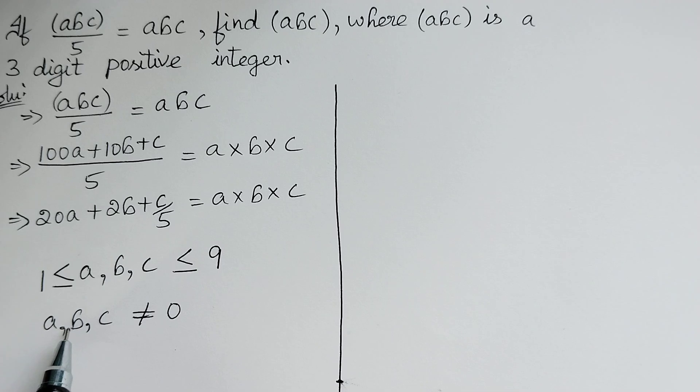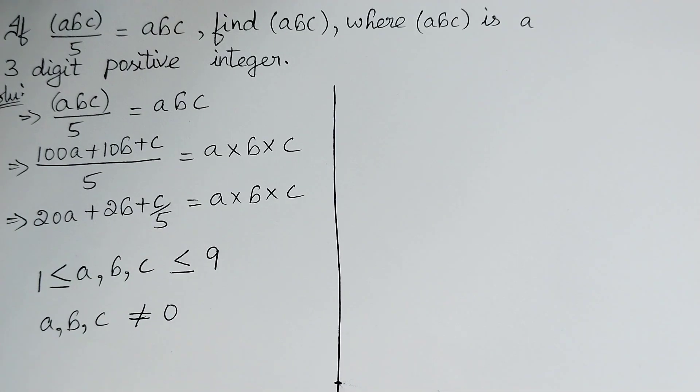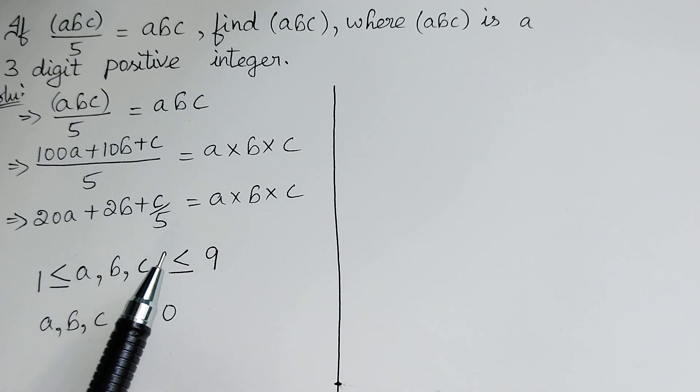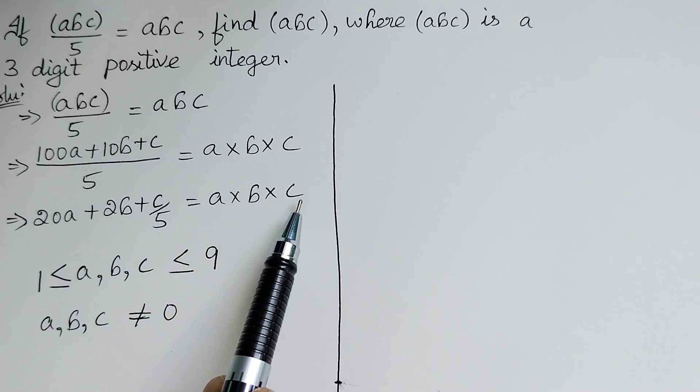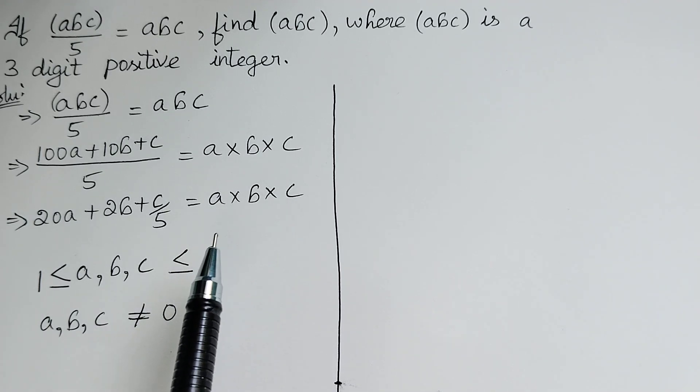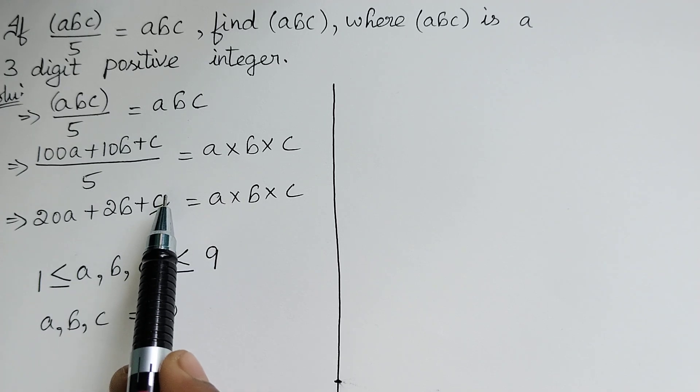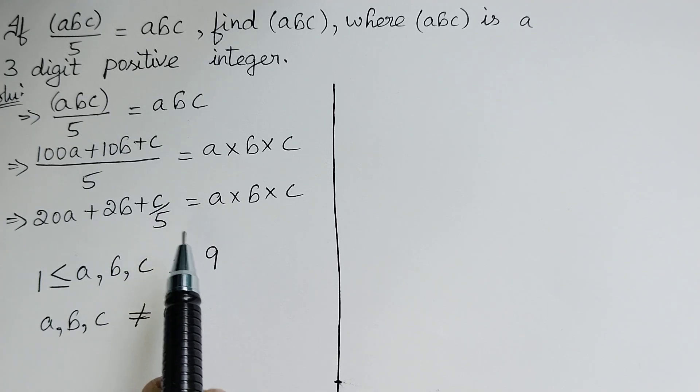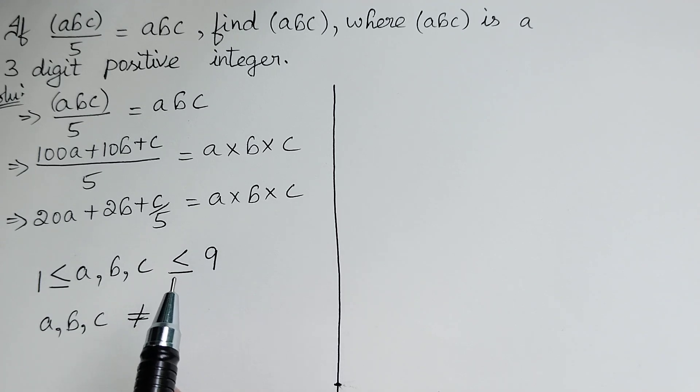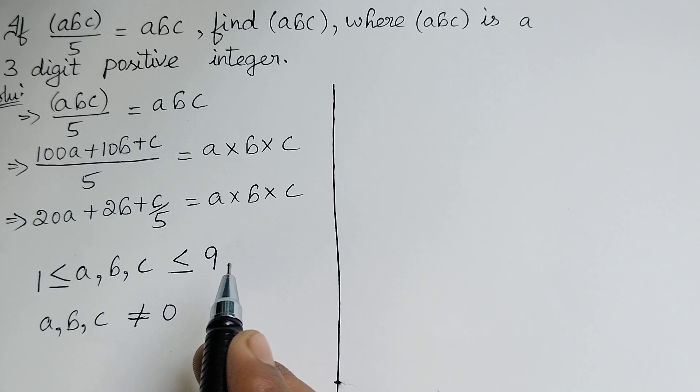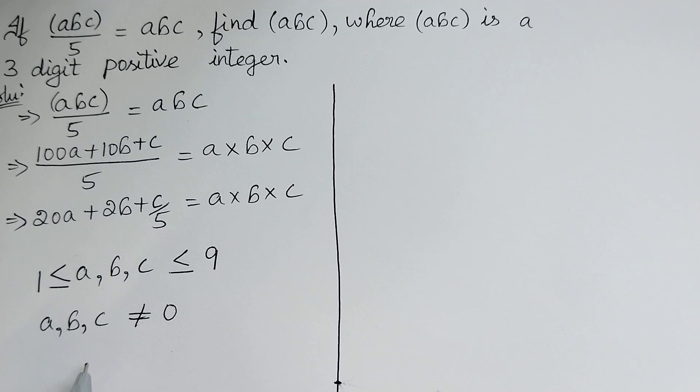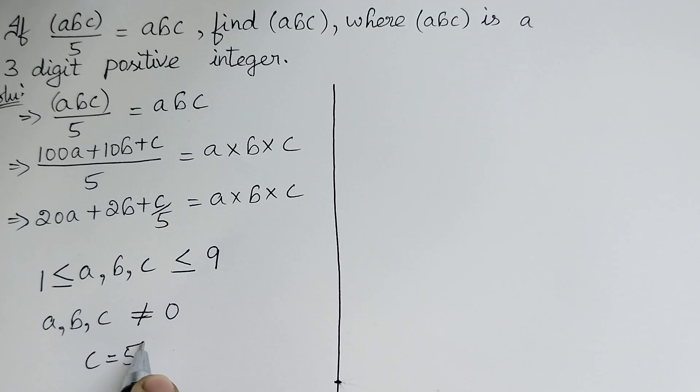From the question we can see that abc is a whole number. Therefore c can't be in the rational form. Therefore c/5 is a whole number, so c must be a multiple of 5. From 1 to 9, the multiples of 5 is the one and only term 5. Therefore c = 5.